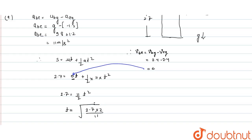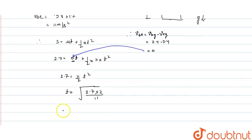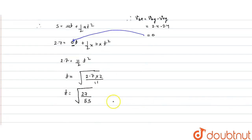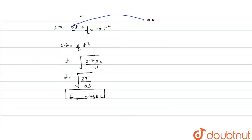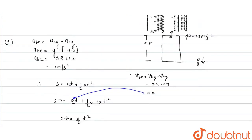Then the answer here, t equals under root of 27 upon 55. T equals 0.7 seconds. This is the time you can see this graph solve. After we have time, we have the bolt hit.